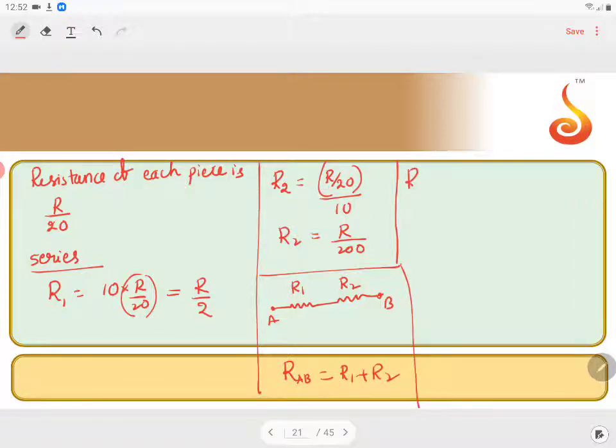That is, RAB equals - RAB means the final resistance. R1 is R by 2, R2 is R by 200. So 200 will be the LCM. Here you will get 100 R, here 1 R. So this is equal to 101 R divided by 200. This is the answer.